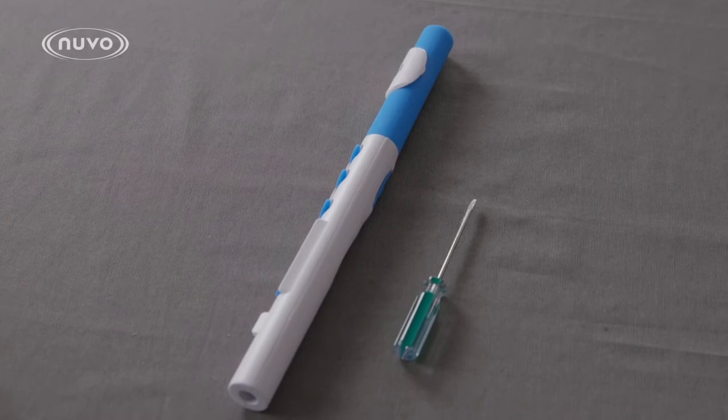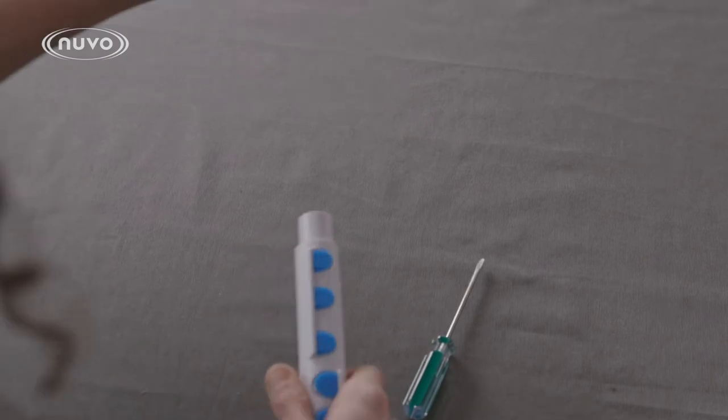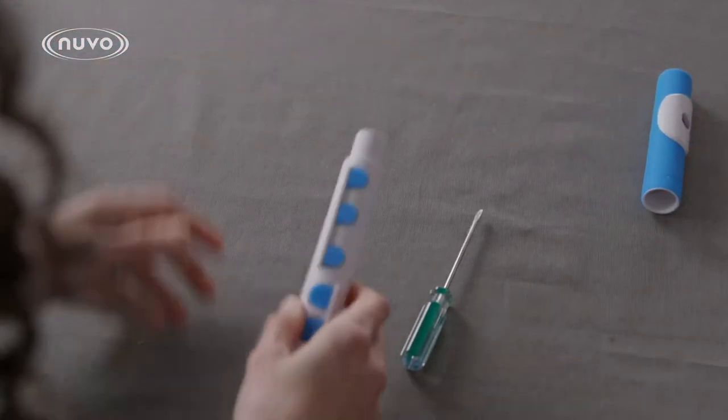In this video I will show you how to disassemble and reassemble the toot. First start by removing the head joint.